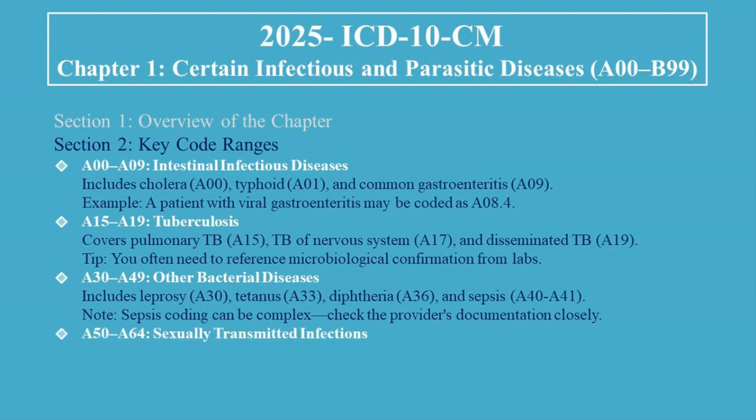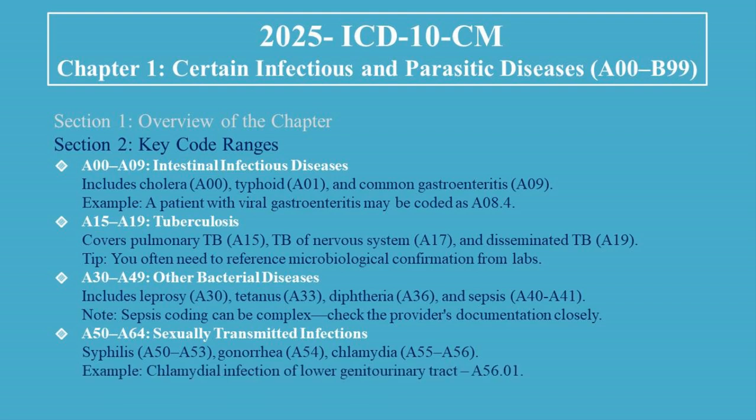A50 to A64 covers Sexually Transmitted Infections, including Syphilis (A50 to A53), Gonorrhea (A54), and Chlamydia (A55 to A56). For example, Chlamydial Infection of the Lower Genitourinary Tract is coded as A56.01.